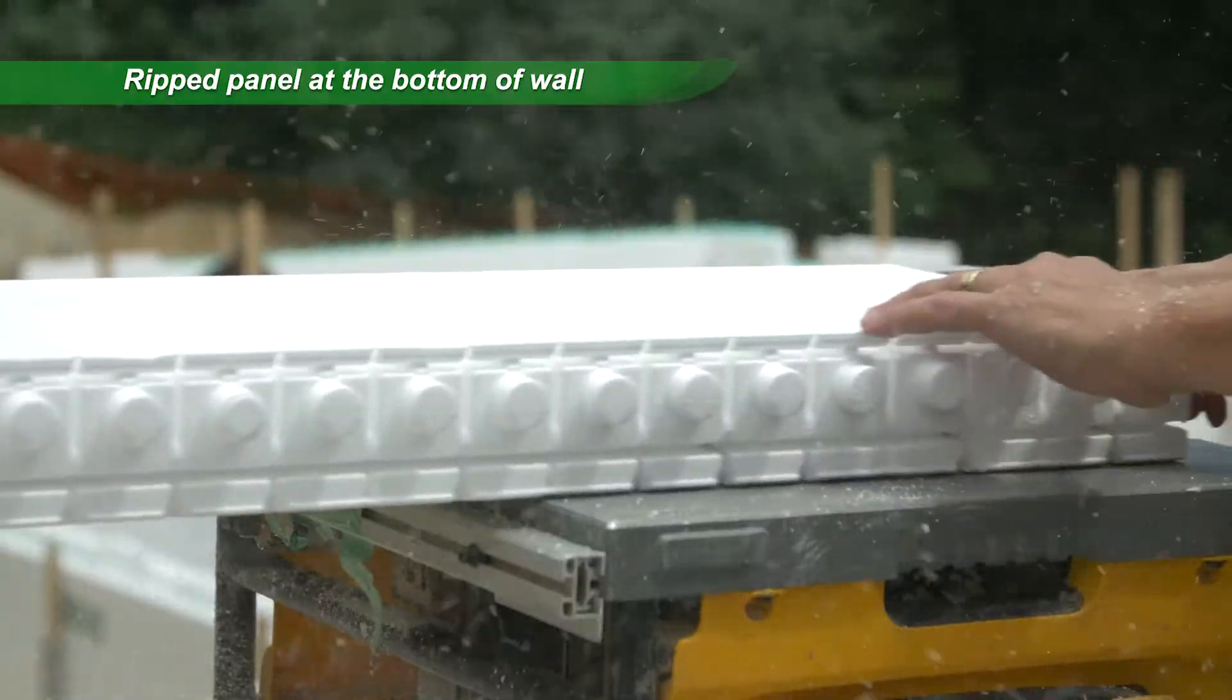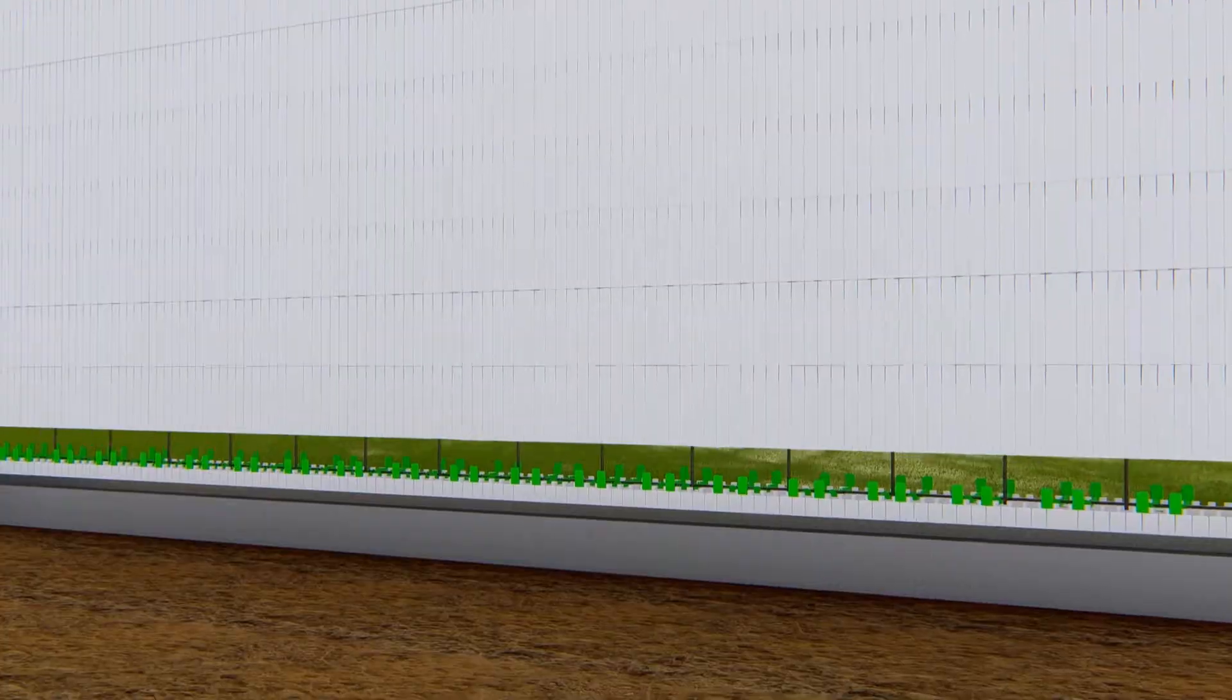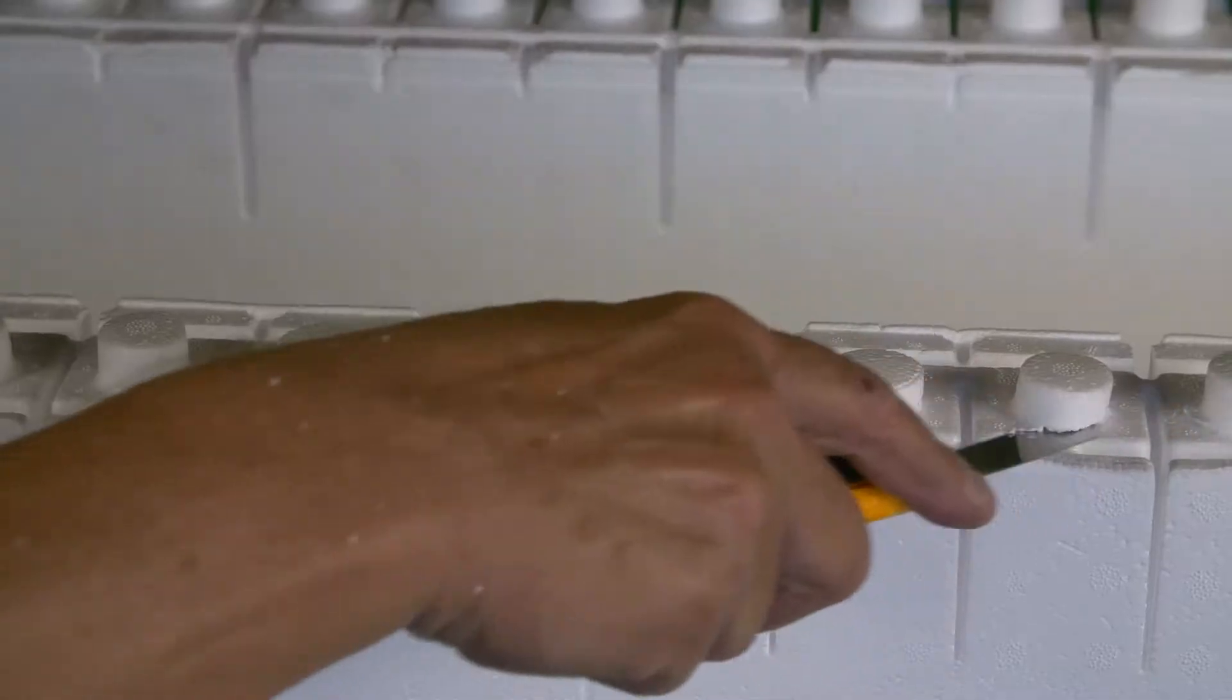If the finished wall elevation has been set by using a ripped panel at the bottom of the wall, a full Quadlock panel can be used on the top course.